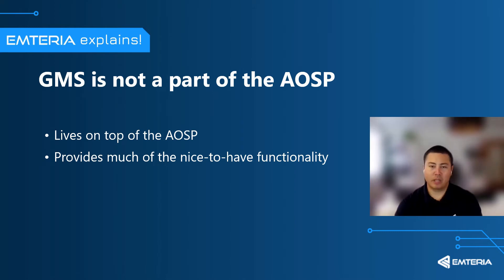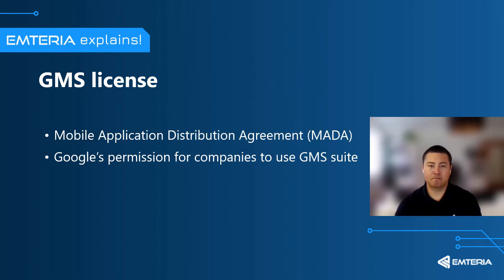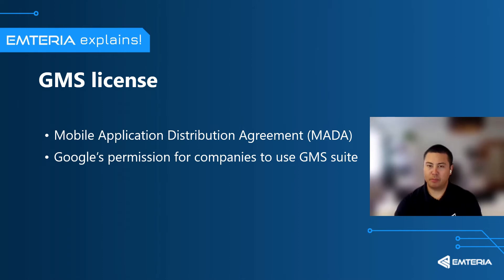Manufacturers relying on Android need to obtain a license from Google in order to enable GMS on their Android devices. This license is also known as the Mobile Application Distribution Agreement, MADA. It contains Google's permission for companies to commercially use the GMS suite with all its applications and cloud-based services.